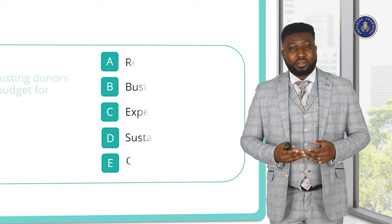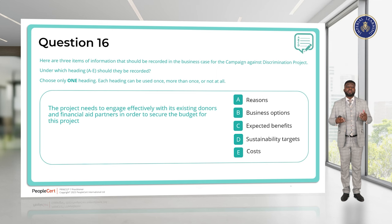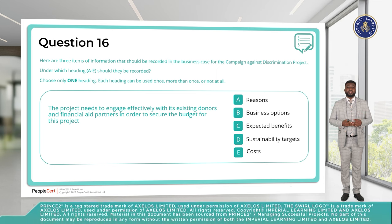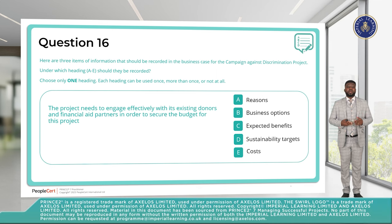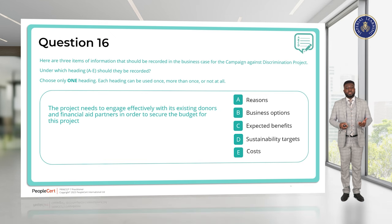Question 16. The project needs to engage effectively with its existing donors and financial aid partners in order to secure the budget for this project. Because we are talking about budget and securing funding, this belongs in the Costs section. The answer is E.